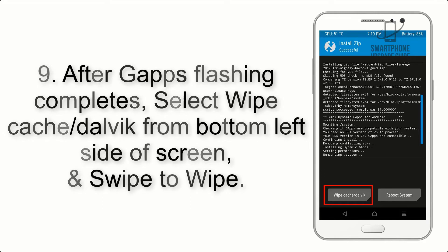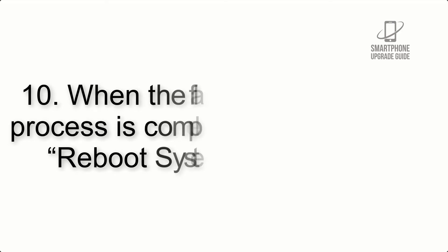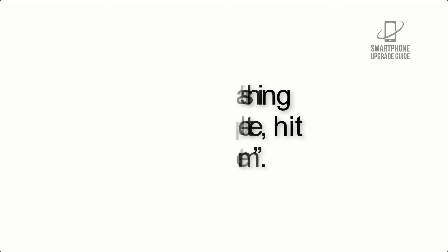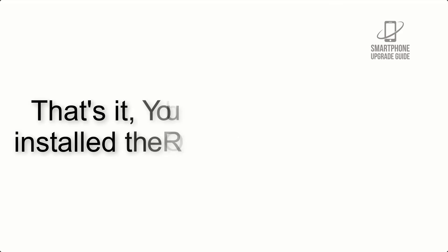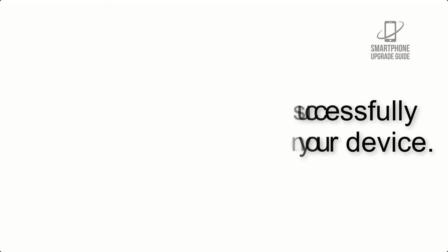Step 8: Flash the GApps zip package in the same manner. Step 9: After GApps flashing completes, select Wipe Cache and Dalvik from the bottom left side of the screen and swipe to wipe. Step 10: When the flashing process is complete, hit Reboot System. That's it — you have successfully installed the ROM on your device.